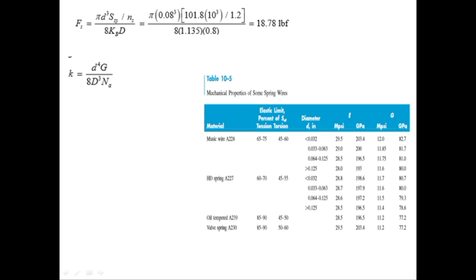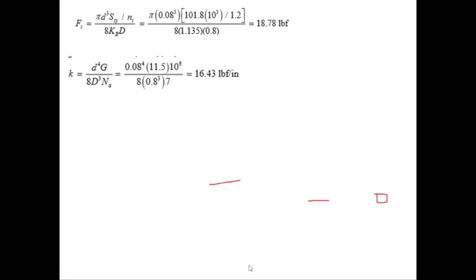For hard drawn spring, our diameter is in the range where the G value for it will be 11.5 Mpsi. Putting the values gives K equal to 16.43 lbf per inch.